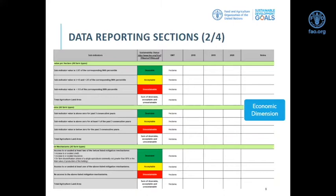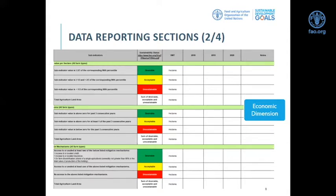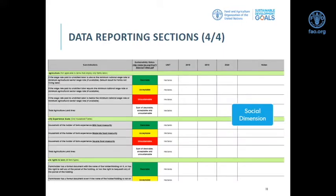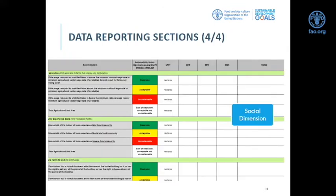The core of the questionnaire is where data are requested — where countries fill in their data. This includes all three dimensions: three indicators for the economic, five for the environmental, and three for the social dimensions. The metadata section is a table listing all 11 indicators, where countries can specify type of variable, data availability, unit of measurement, frequency of data collection, and more. The feedback section contains six questions with a scale from strongly agree to strongly disagree, plus four open questions for additional detail.